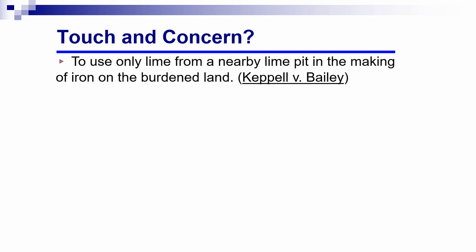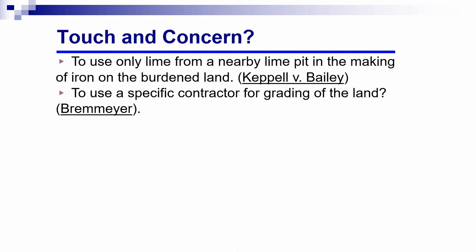A more modern example is the Braemar case, a Washington state case where a landowner expecting to grade land in the future covenanted with a contractor to use that specific contractor for grading. The land was later sold before grading, and the new owner didn't want to use the same contractor. The court's answer was much like Keppel v. Bailey: a covenant to grade the land would touch and concern the land, but a covenant to use a particular contractor for grading would have no bearing on what happened on the land itself and therefore did not touch and concern it.